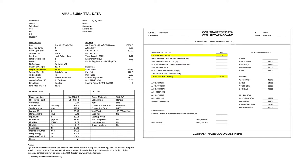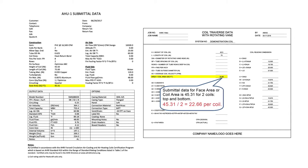Verify the coil area with the submittal data sheet. On the AHU-1 submittal data sheet, face area is documented as 45.31 square feet for two coils, top and bottom. Therefore, each coil's face area or coil area is 45.31 divided by two, which is 22.66 square feet for the top coil and 22.66 square feet for the bottom coil.